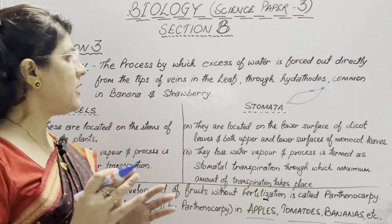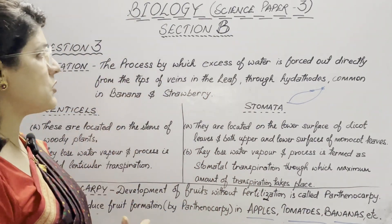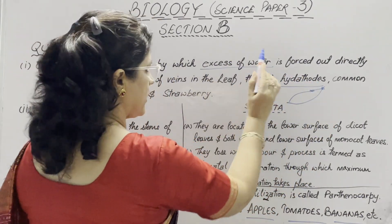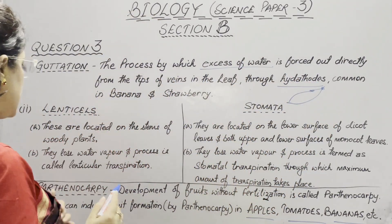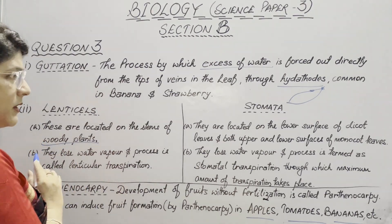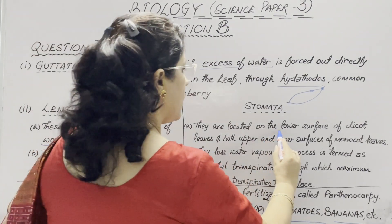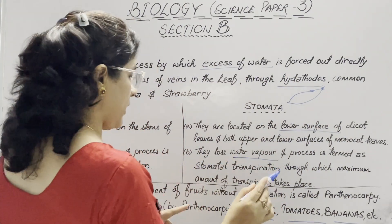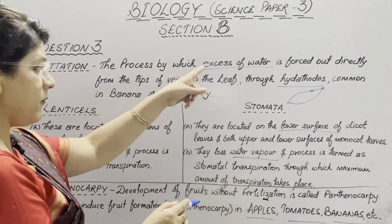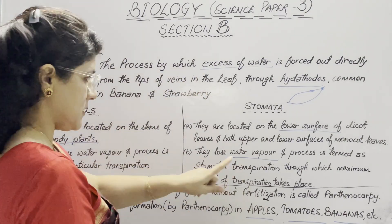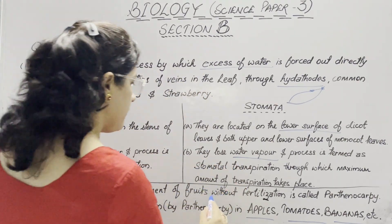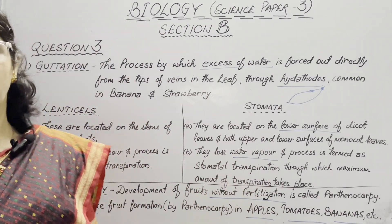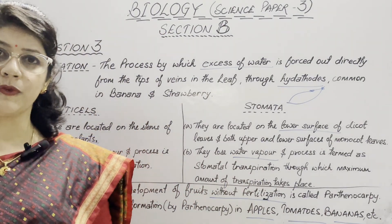Keywords of definitions are very important. For example, in Guttation, our keywords are hydathodes and 'excess of water is forced out.' For lenticels, the keyword is 'woody plants' — stems of woody plants. For stomata, 'lower surface of dicot leaf.' They lose water vapour, not water — water vapour is coming out. And for Parthenocarpy, 'without fertilization' is the keyword. These keywords are very important in your definitions if you want to score full marks.